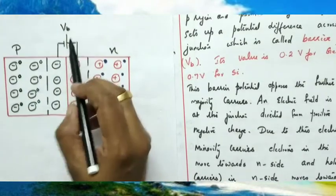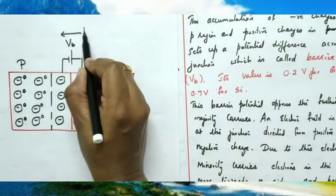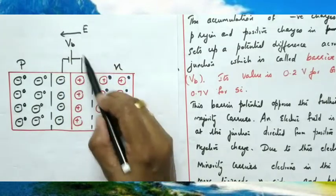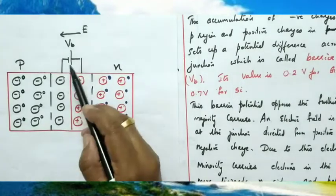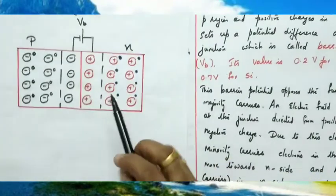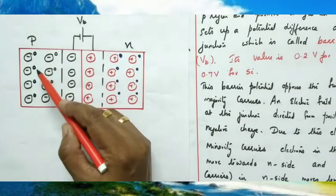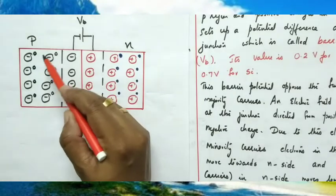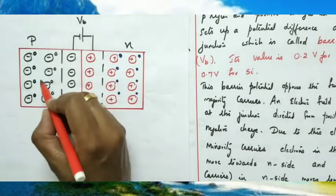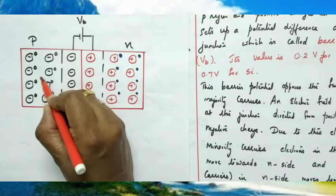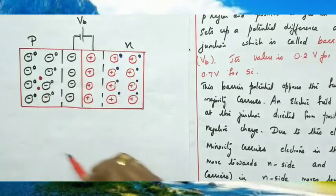An electric field also develops at the junction, directed from positive to negative — from the N region towards the P region. Now, in the P region, along with the majority carriers (holes), there are also some minority carriers — electrons. For example, there are two electrons in the P region.